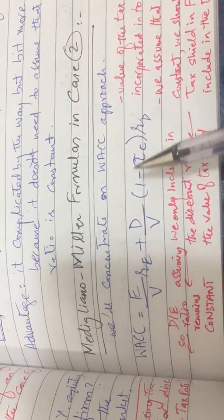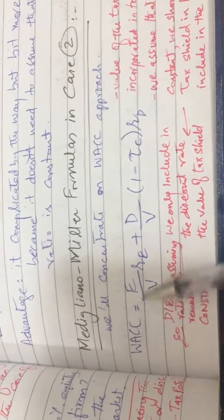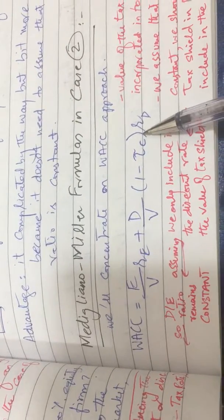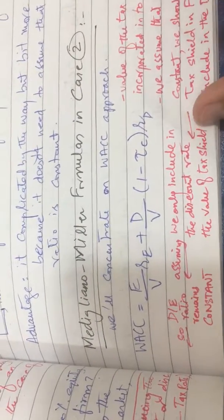was the Modigliani-Miller case 2. So we see the WACC, is this right? We have to include the value of the tax shield. What we have done here is if you see this formula, this formula is further refined like this.